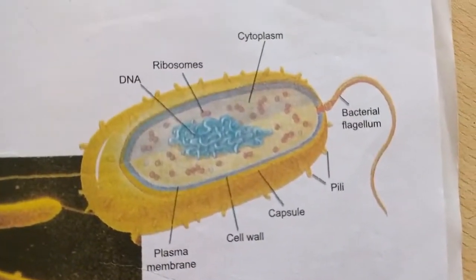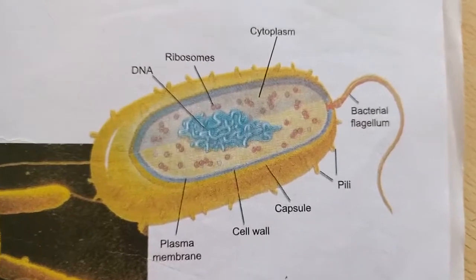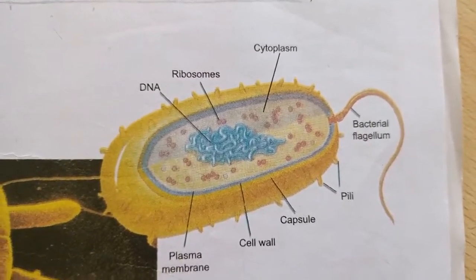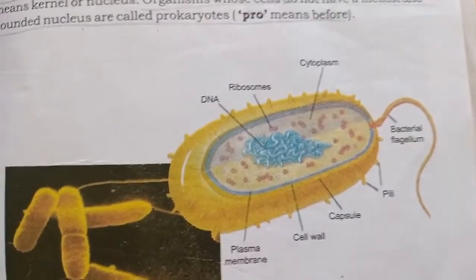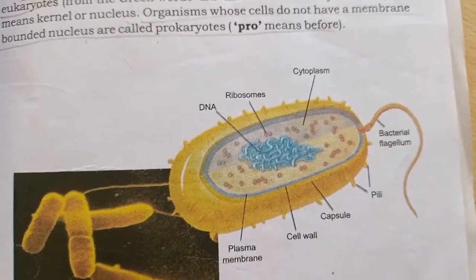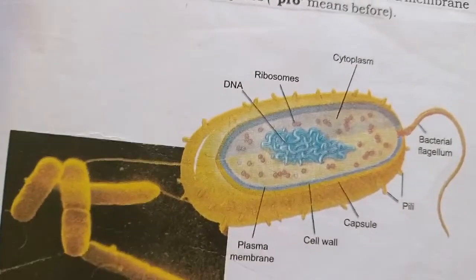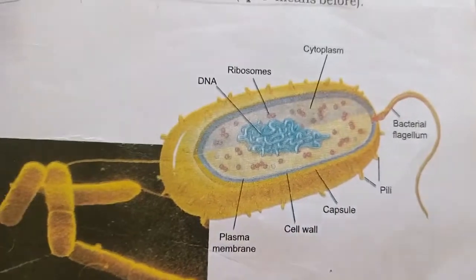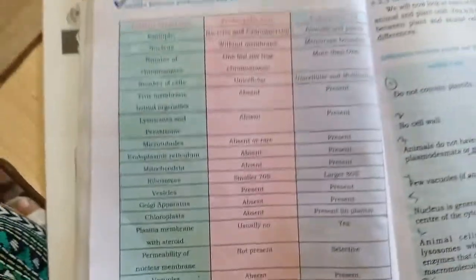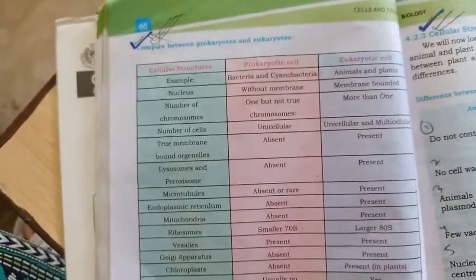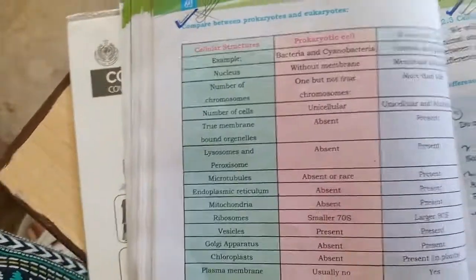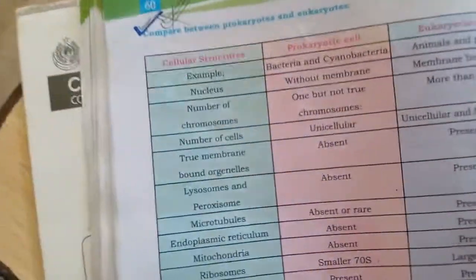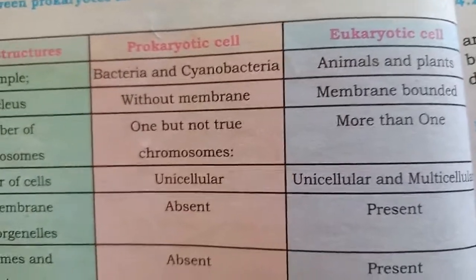Page number 59 shows a diagram of a bacterial cell. This is a homework assignment — draw a neat, labeled diagram of a bacterial cell. I took a test and all of you had very poor diagrams, so you need to practice. Now turn over the page to page number 60. There are some differences between prokaryotes and eukaryotes. What is the meaning of prokaryote?